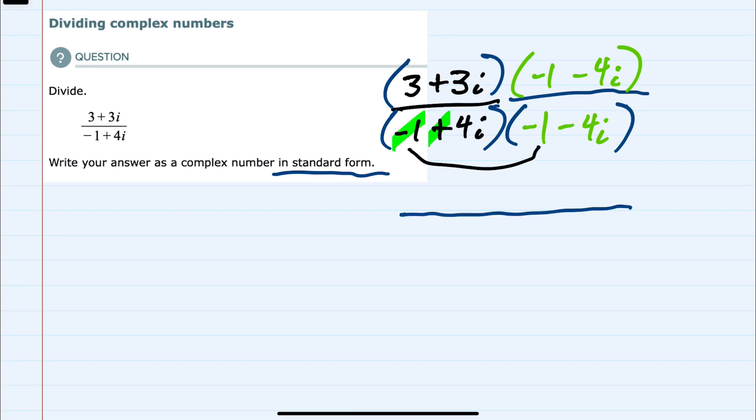Then minus 1 times minus 1 is 1. Minus 1 times a minus 4i is a plus 4i. And then I need to distribute the 4i. Here we have 4i times minus 1 is minus 4i. And 4i times a minus 4i is minus 16i squared.